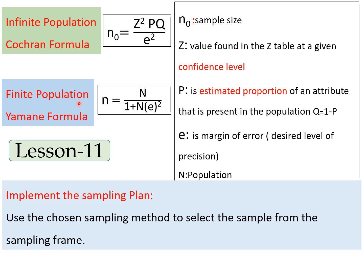When the population is known, we use the Yamane formula: n = N / (1 + N × E²), where N is the known population size and E is the marginal error. The last step of the sample design process is implementing the sampling plan — using the chosen sampling method to select the sample from the sampling frame.